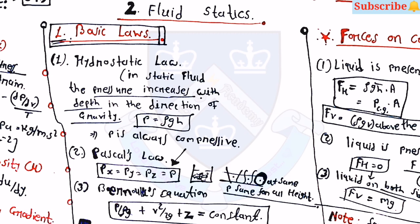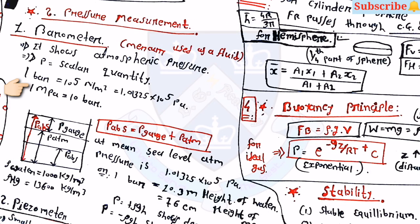The second topic is fluid statics. The first law is the hydrostatic law: in a static fluid, pressure increases with depth in the direction of gravity, with equation p equals rho-g-s. The second is Pascal's law: px equals py equals pz equals p. The third is Bernoulli's equation: p by rho-g plus v-squared by 2g plus z equals constant. For pressure measurement, a barometer shows atmospheric pressure. 1 bar equals 10-raised-to-5 pascal, and p-absolute equals p-gauge plus p-atmosphere.